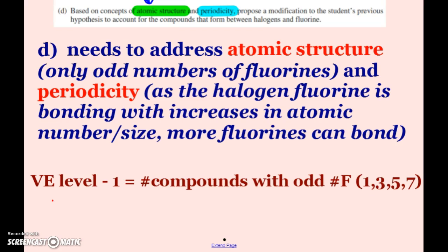For example, bromine. Bromine is on the fourth period, has electrons on the fourth energy level, valence electrons. Minus one is three, so it's going to have three compounds: BrF, BrF3, and BrF5. I hope that helps with this question, and I'll see you soon.